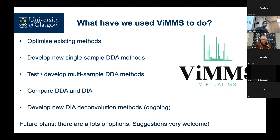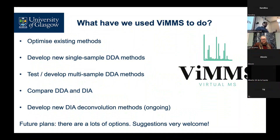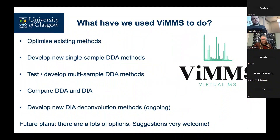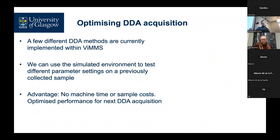We've used VIMS for a variety of things and see a lot of different applications in the future: optimizing existing methods, developing new methods either in single-sample or multi-sample situations, and we've also used it to compare DDA and DIA. We're looking at new DIA decomposition methods. If you have any suggestions of things you think it might be useful for, please do get in touch.